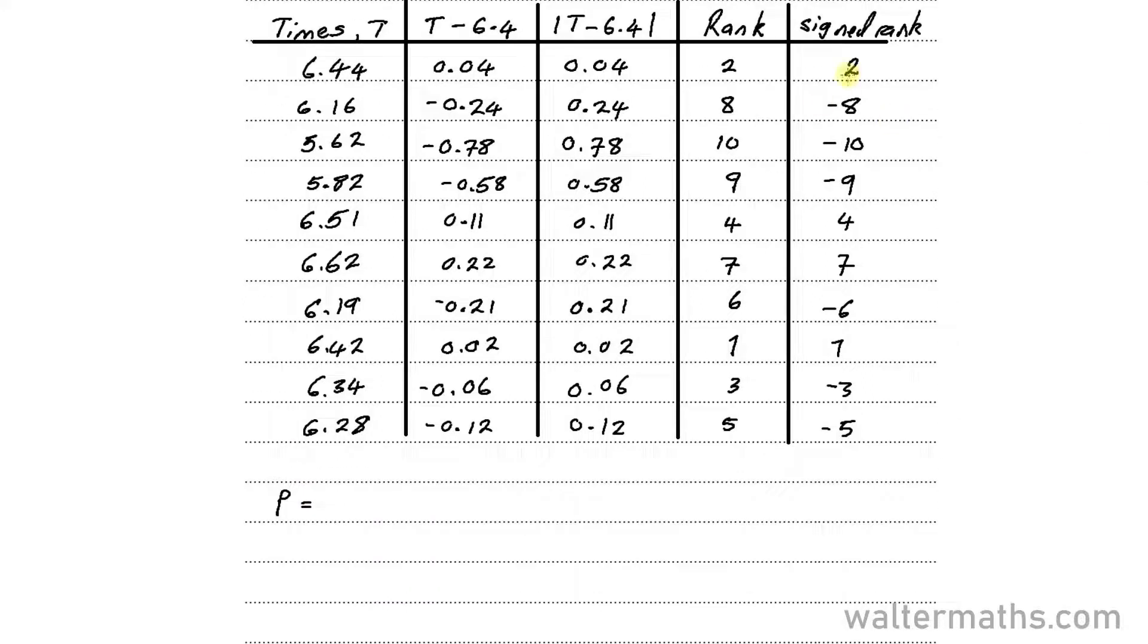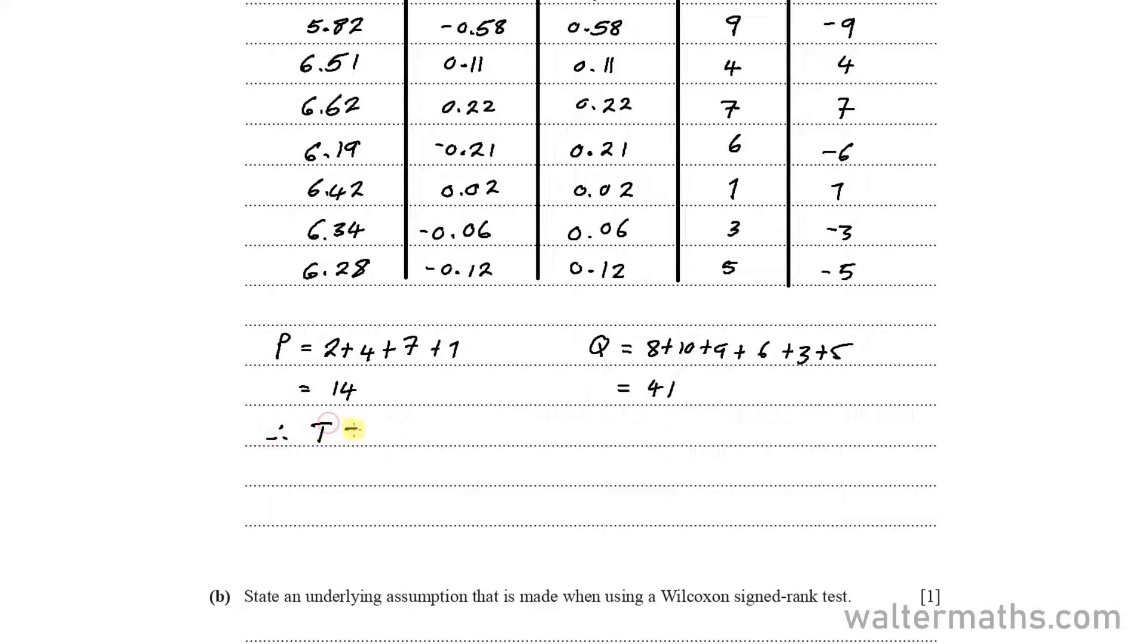Okay, so here P, which represents the sum of positive ranks, means we are adding all the positive ranks. So we are adding 2 plus 4 plus 7 here, plus 1 here. And adding these, we should get 14. Then for Q, which is the sum of negative ranks, that's 8 plus 10 plus 9, plus 6, plus 3, plus 5. And this gives us 41. So here, the test statistic is the smaller of the two. So we're going to use 14 as the test statistic.